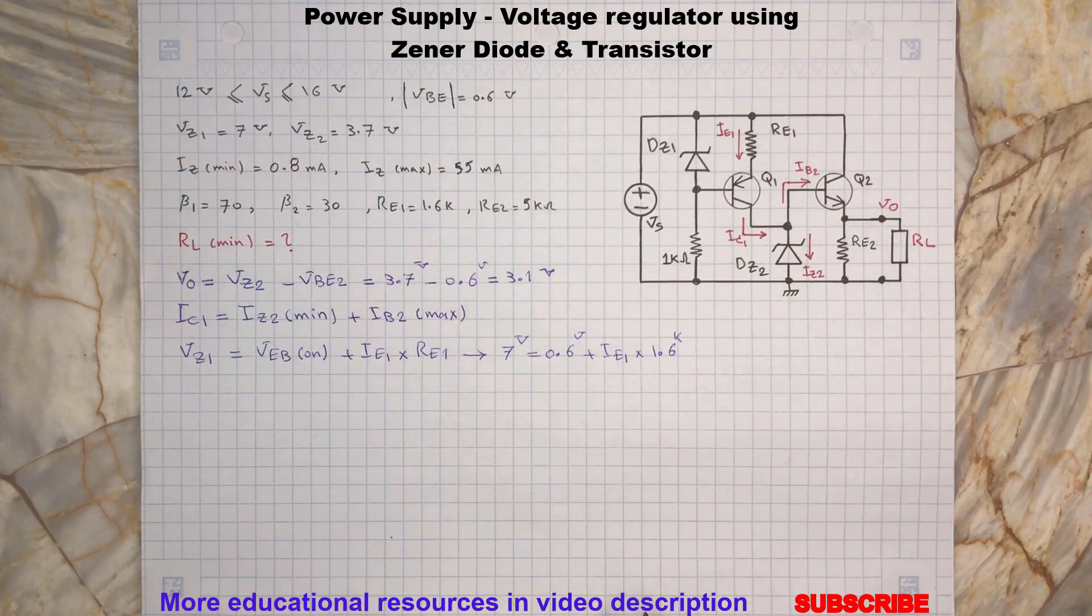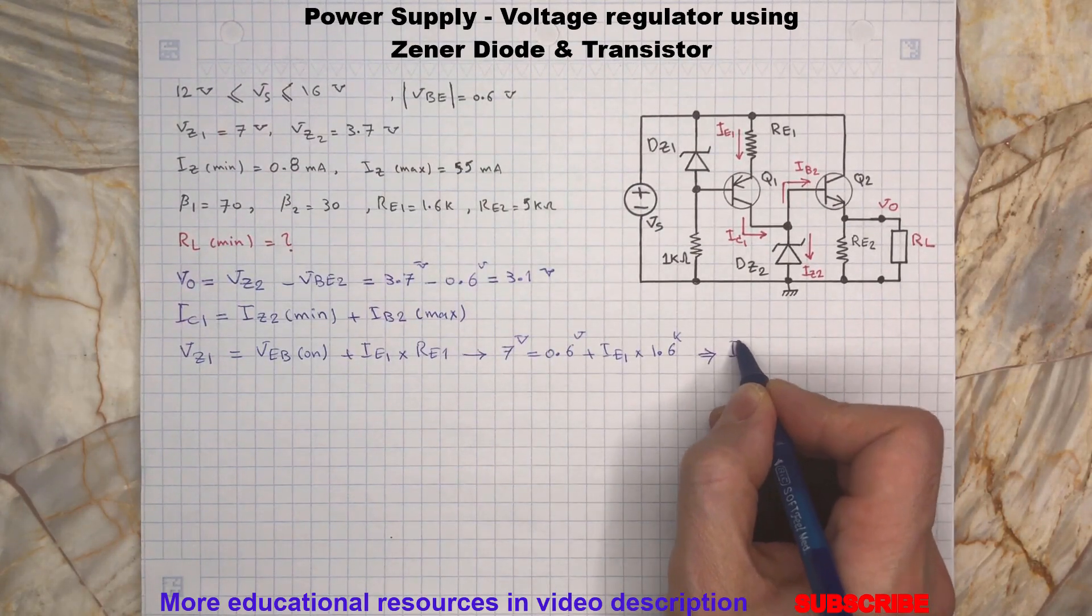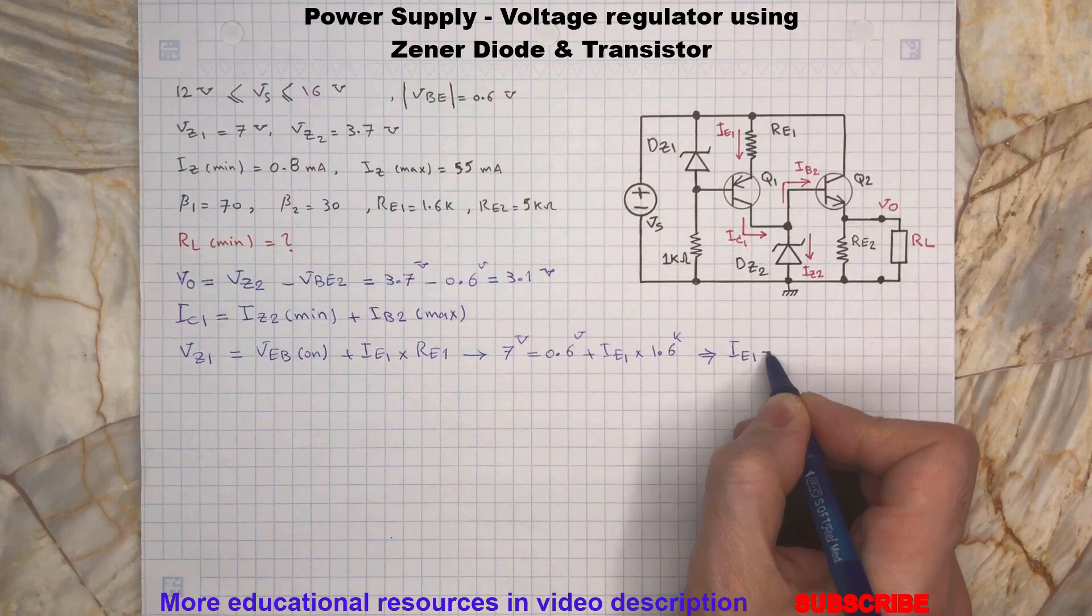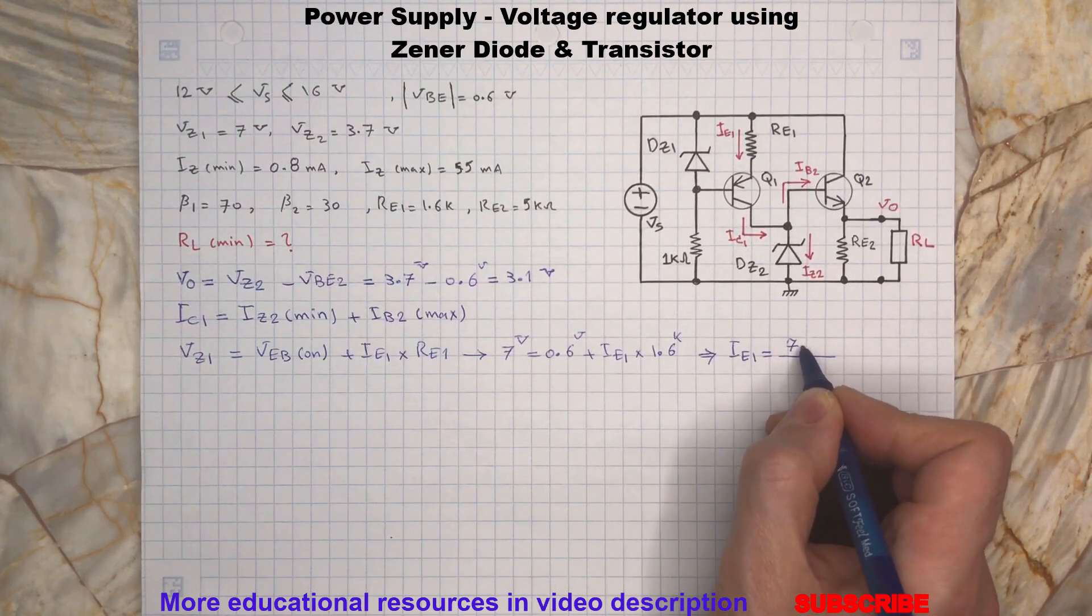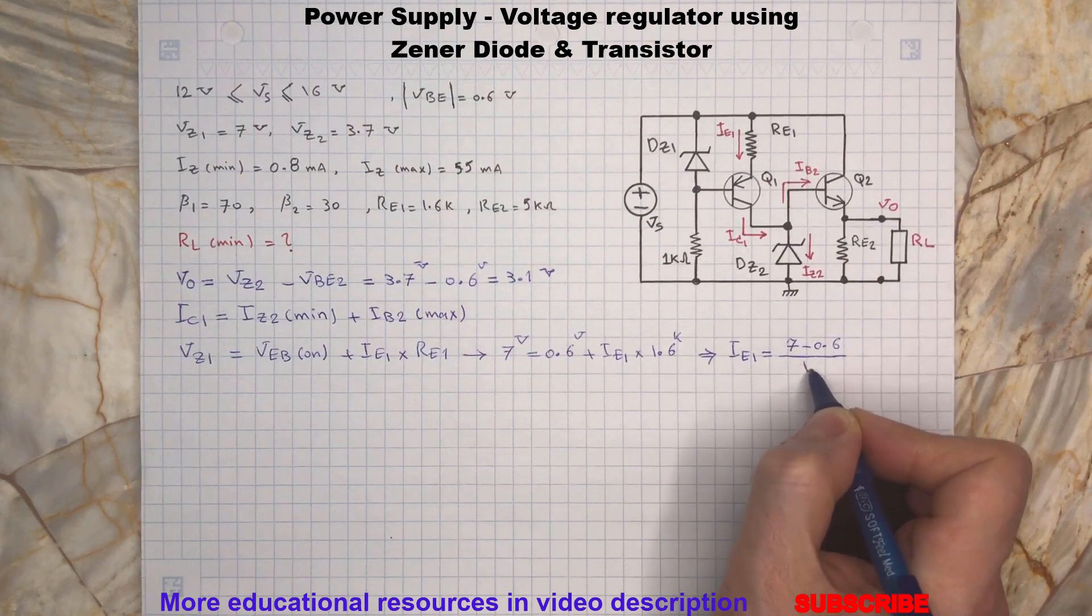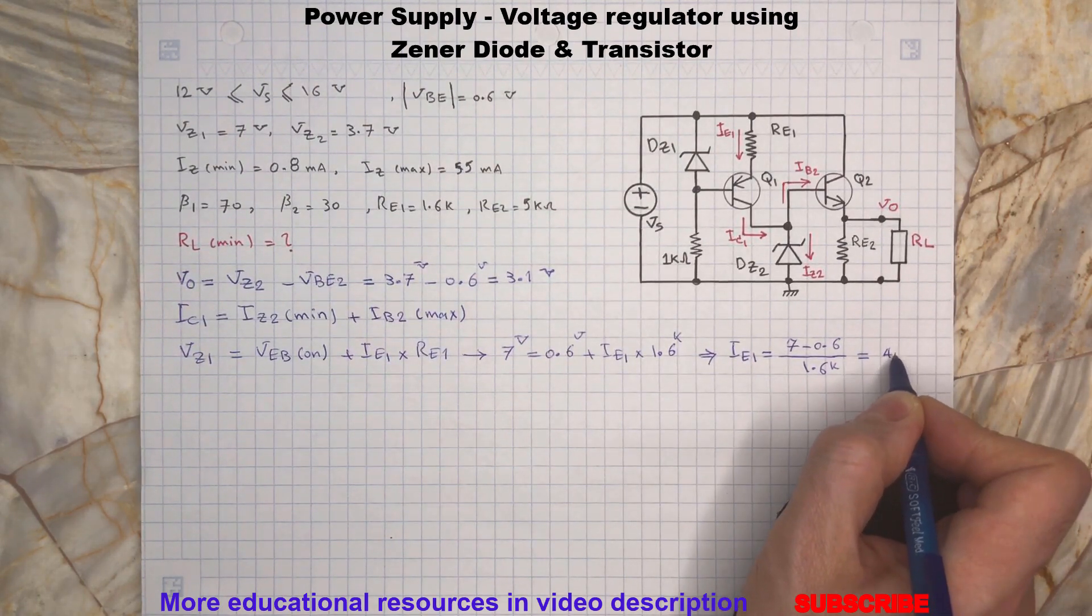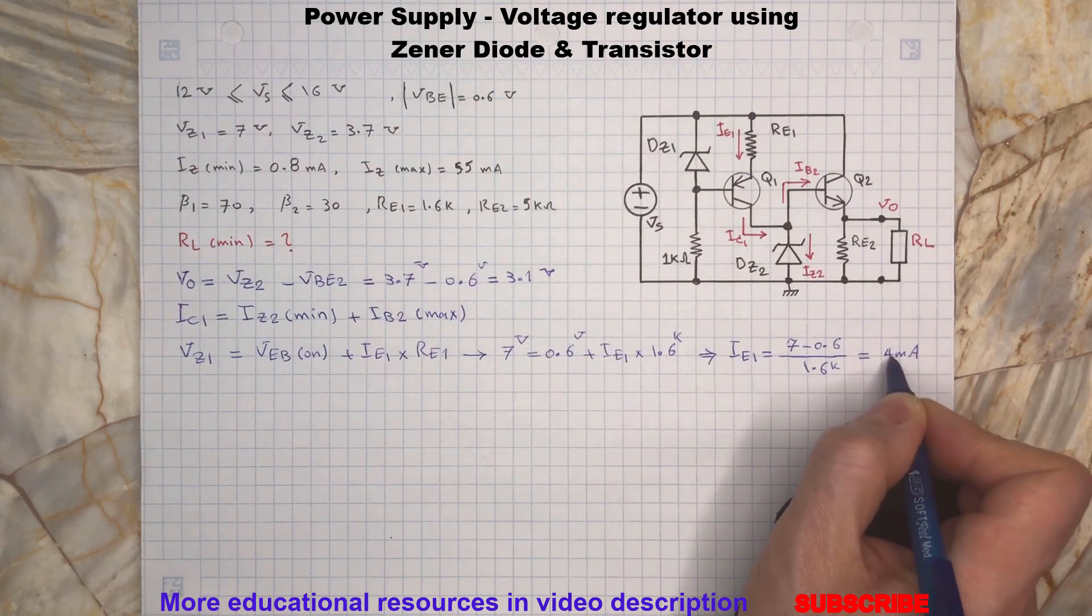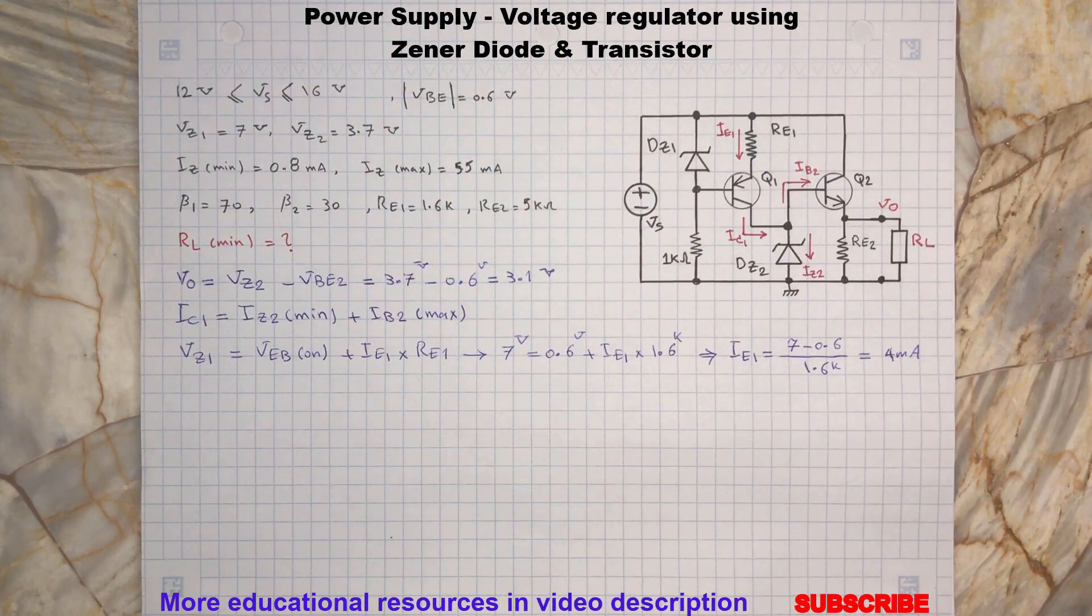And the emitter current for transistor Q1 will be... We know that in BJT transistor the current and emitter and collector have the following relationships.